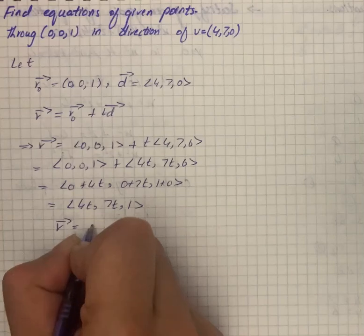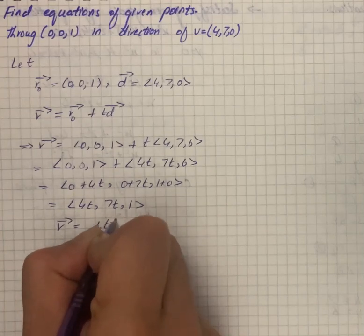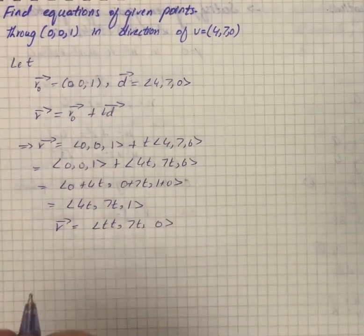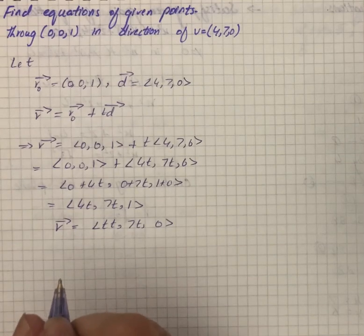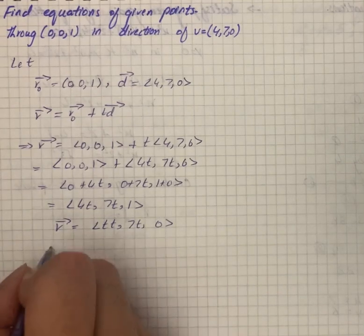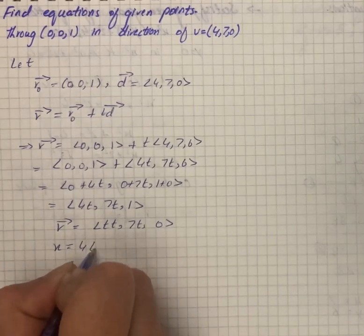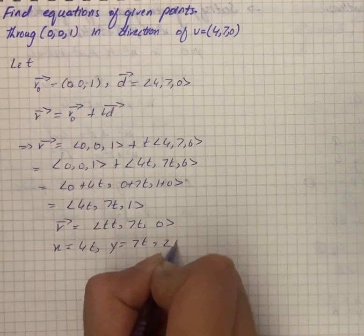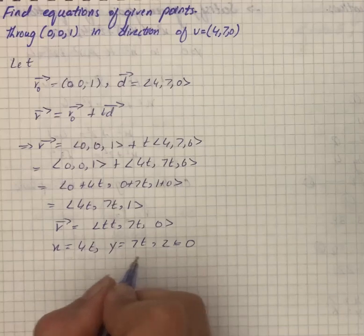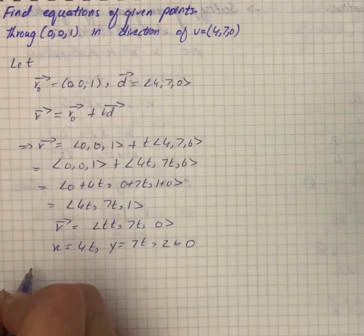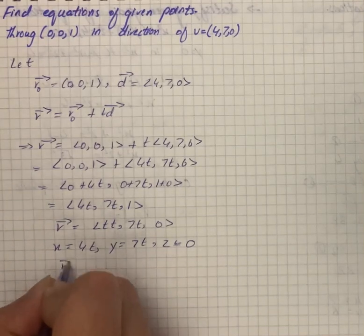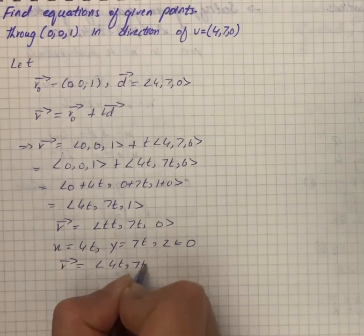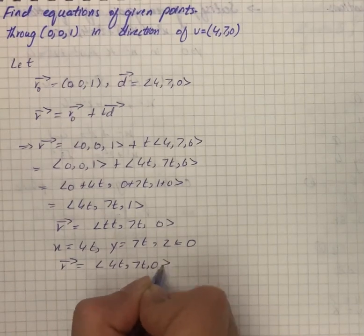The parametric equations of the line are x equals 4t, y equals 7t, and z equals 0. The vector equation will be r vector equals (4t, 7t, 0).